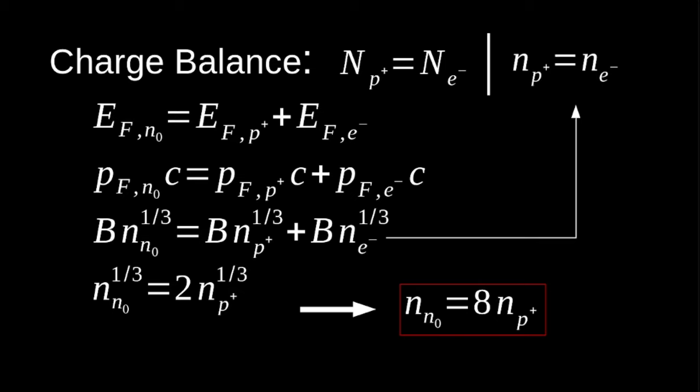Cubing both sides gives us the key result: the number density of neutrons equals eight times the number density of protons or electrons. So we have eight times as many neutrons as protons or electrons. There's a lot of hand-waving, but this is a great way to see why neutron stars get the name neutron star — because thinking about what happens to matter under stellar core compression, using just protons, neutrons, and electrons, you end up with a ton more neutrons.